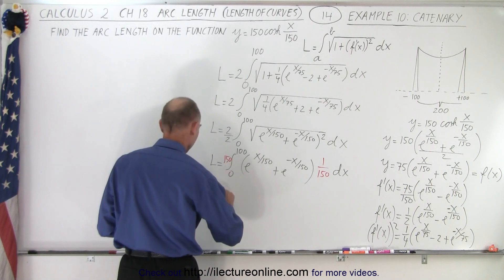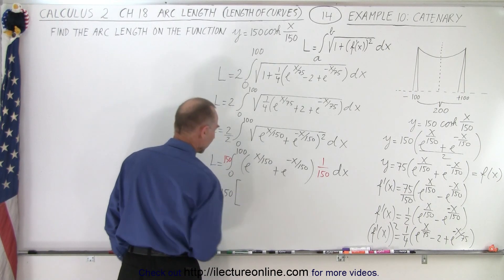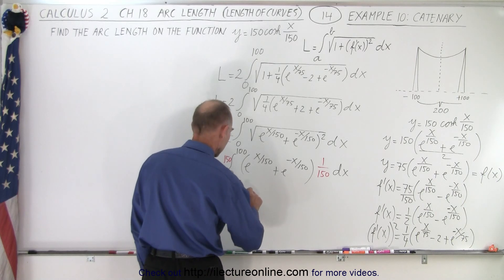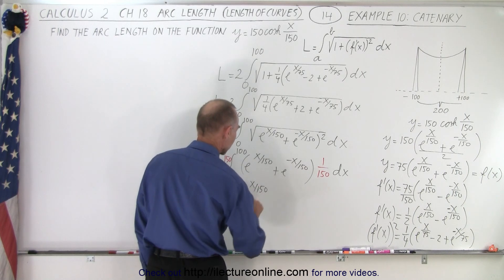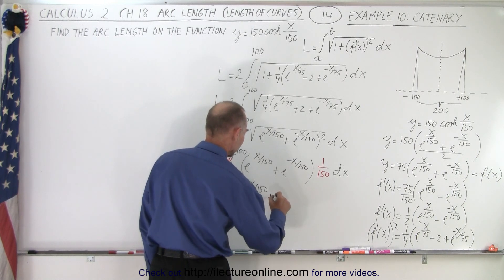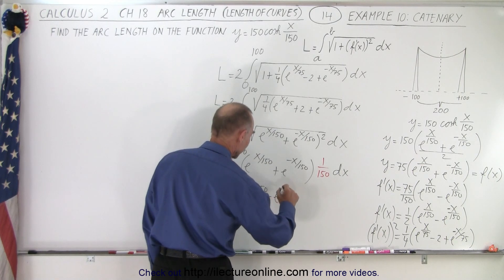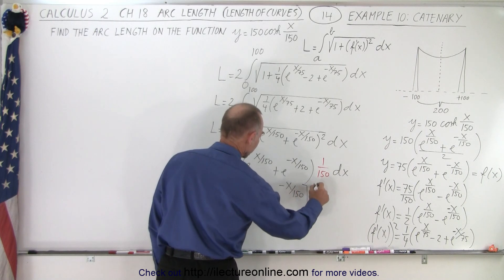After integrating, we have L equals 150 times the quantity e to the x over 150 minus e to the minus x over 150, evaluated from 0 to 100.